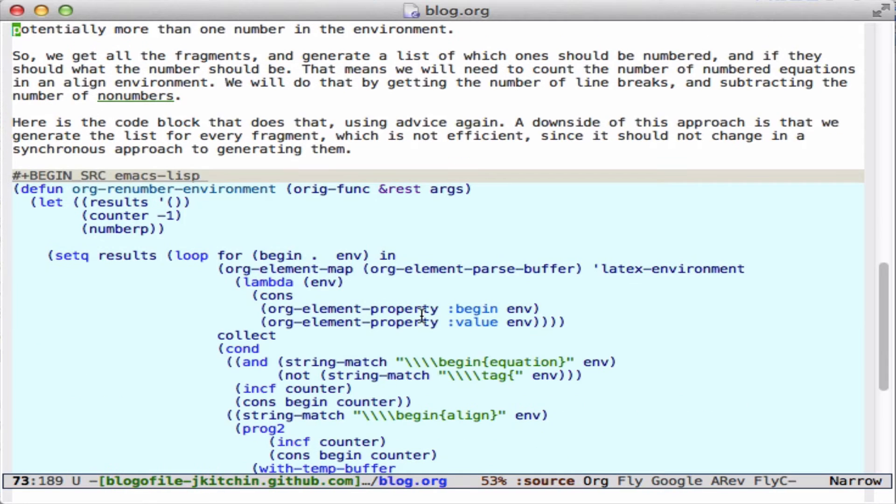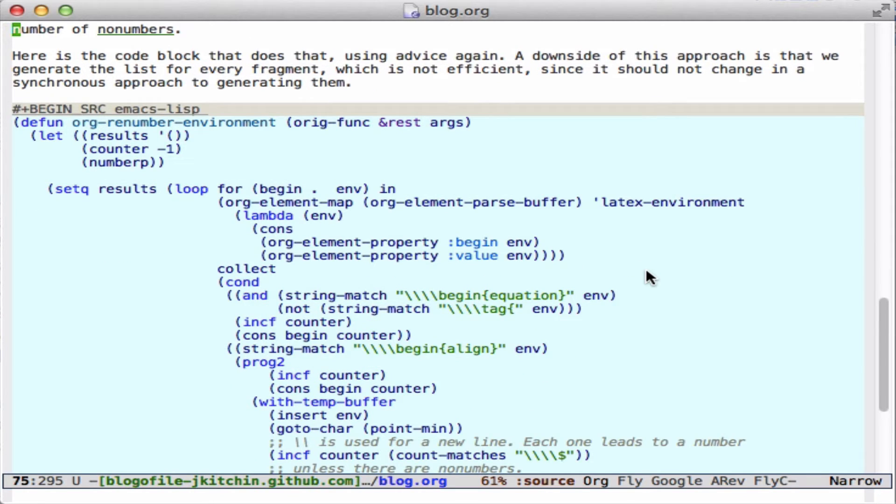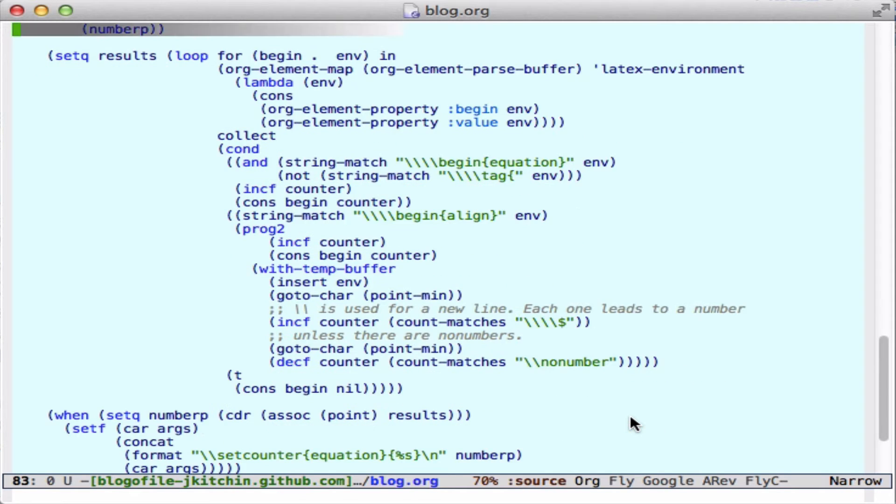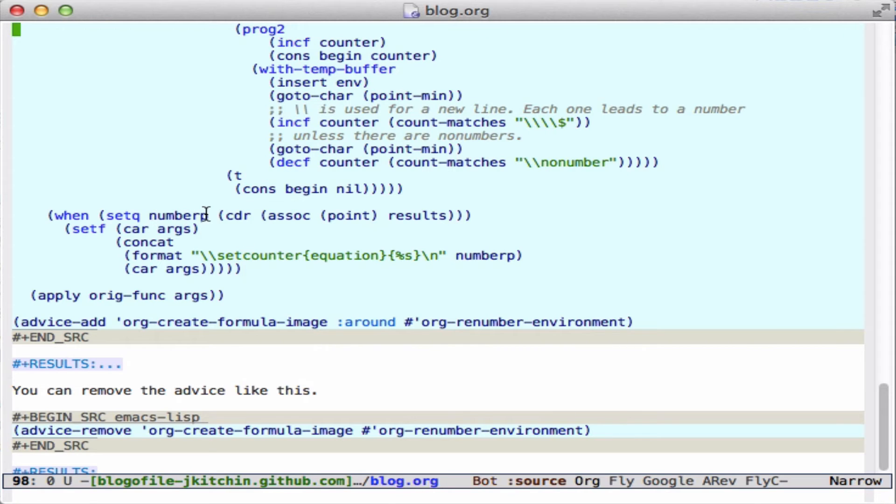So I make a function here. This is going to be an advice function, so it will advise the image creation function. And then what we do is map through the buffer, get all the LaTeX environments, and try to figure out which number it should start with. So we just keep track of a counter, and we look for non-tagged equation environments and align environments. We look for all of the line breaks that are numbered, provided that they don't have the no number in them, and we just keep track of them. And so any time we get a number, then we just insert this line into the string, and then we call the original function to do it.